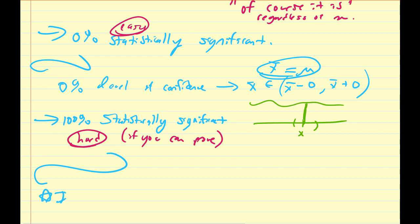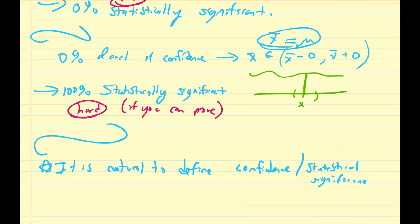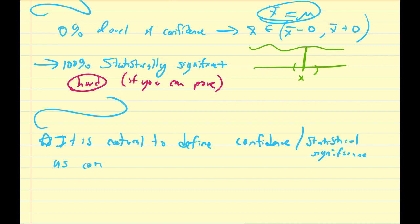So it is natural to define confidence and statistical significance as complements of one another. So we're going to define c to be equal to our level of confidence.